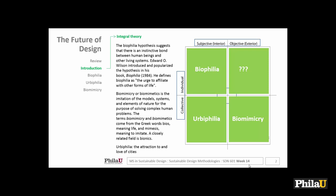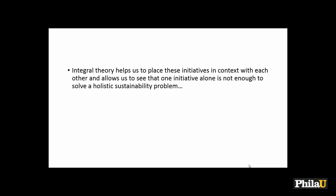Biomimicry or biomimetics is the imitation of models, systems, and elements of nature. Biomimicry and biophilia are really, really different things. I'm very frustrated with these terms because they're being used extremely naively in design. Studio students say 'I have a green roof, I have a biophilic project' — and I think it's got to be a lot deeper than that. I'm going to use integral theory to help us sort through biomimicry and biophilia.